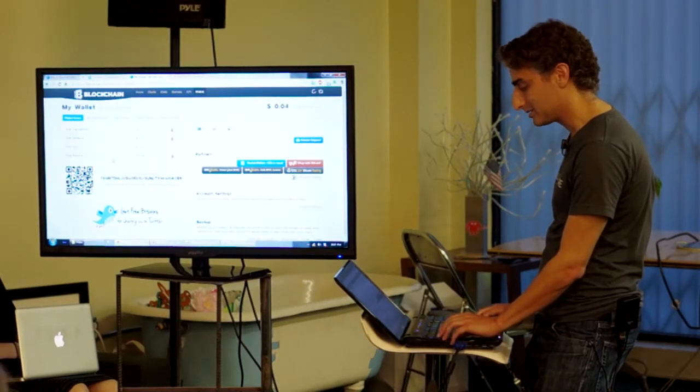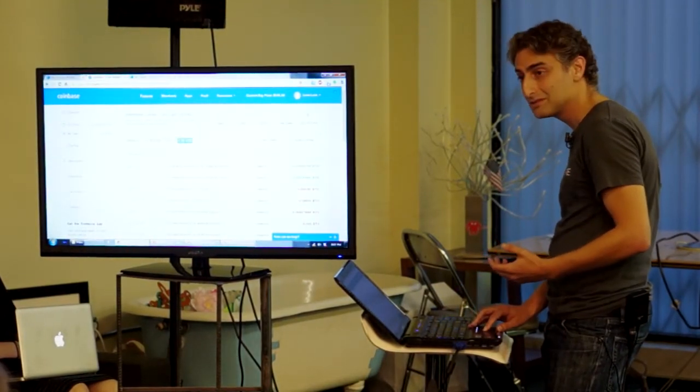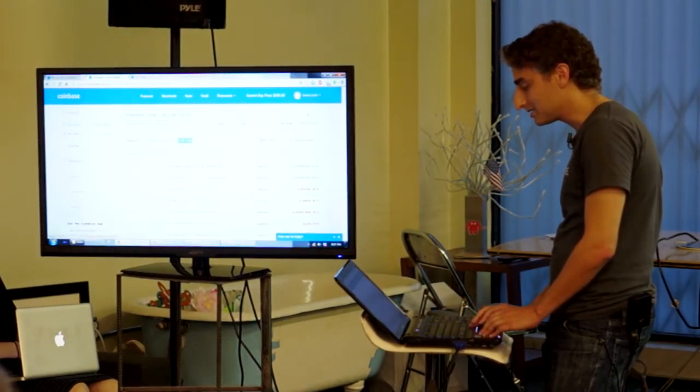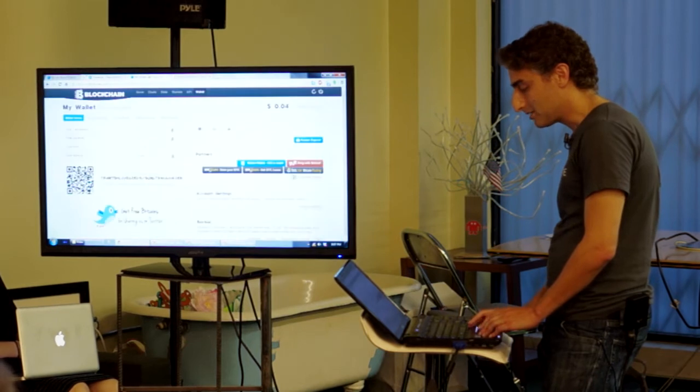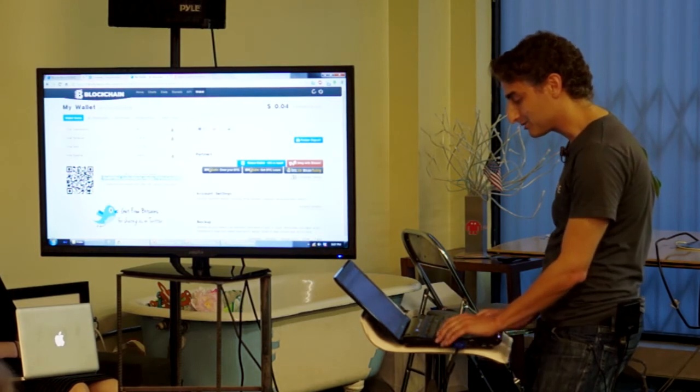So here I have a wallet with Coinbase, and here I have a wallet with blockchain.info. These are what my wallets look like. In this wallet, I have about $9. And I'm going to send some money. And I want to send it to this wallet.